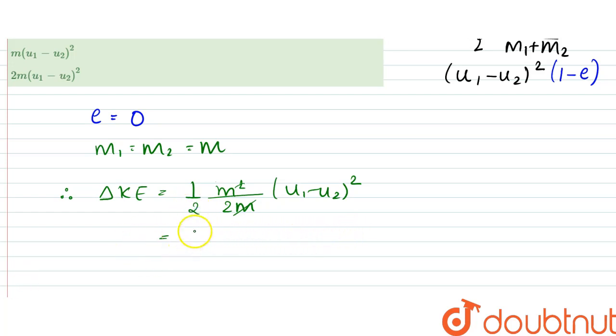be equal to half into, so this would be 2 into 2, so that is 1 by 4 into m into u1 minus u2 the whole square.